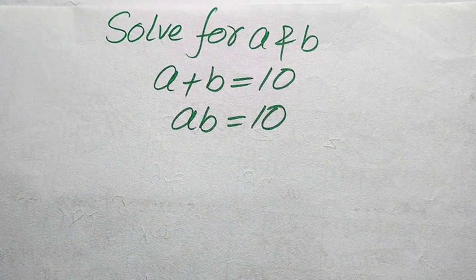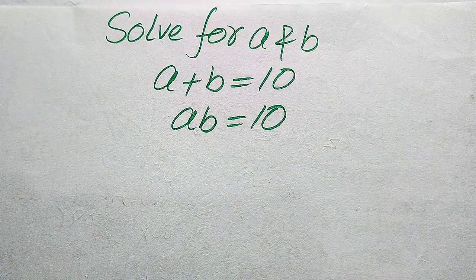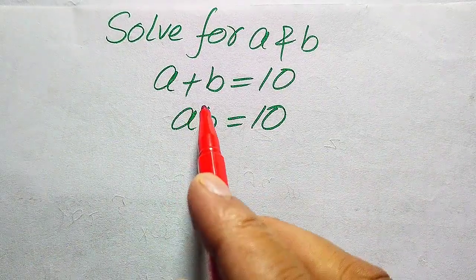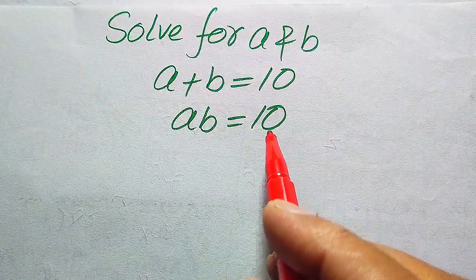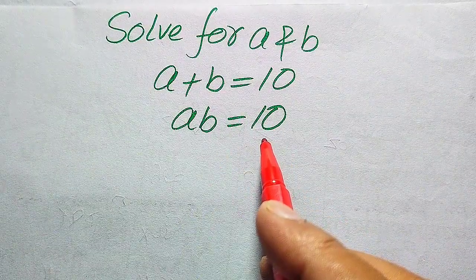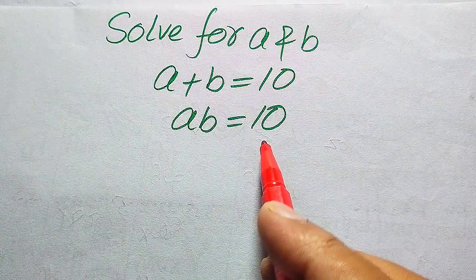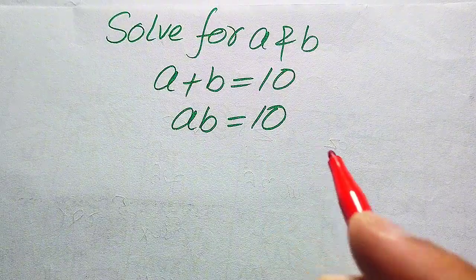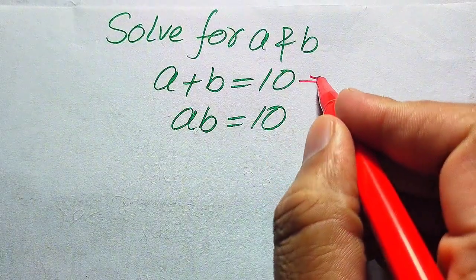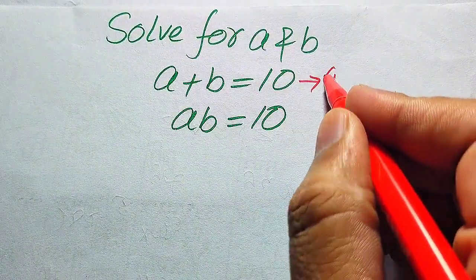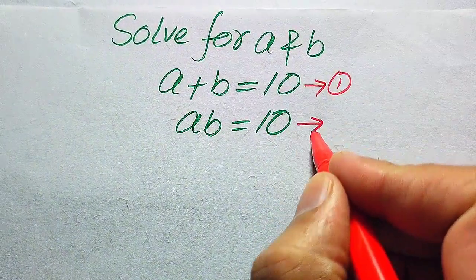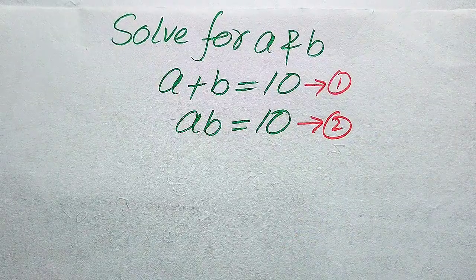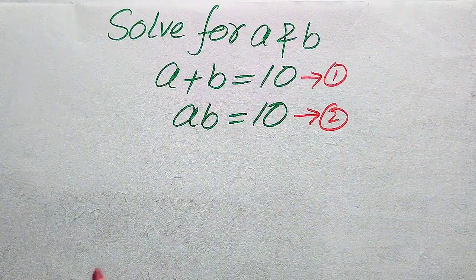Hello everyone. How to solve this problem for the values of a and b, if we have a plus b equals 10 and ab is also equals to 10. We will solve this problem for the values of a and b. We call this equation number one and this equation number two.